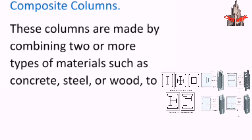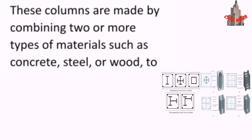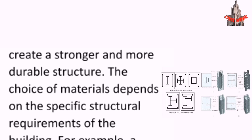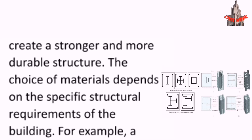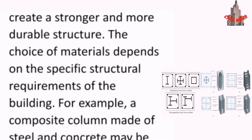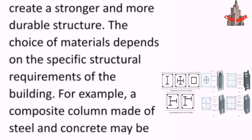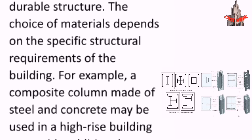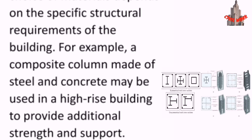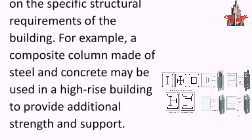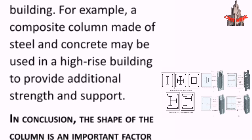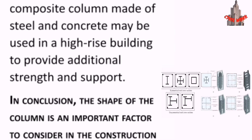Composite columns are made by combining two or more types of materials, such as concrete, steel, or wood, to create a stronger and more durable structure. The choice of materials depends on the specific structural requirements of the building. For example, a composite column made of steel and concrete may be used in a high-rise building to provide additional strength and support.